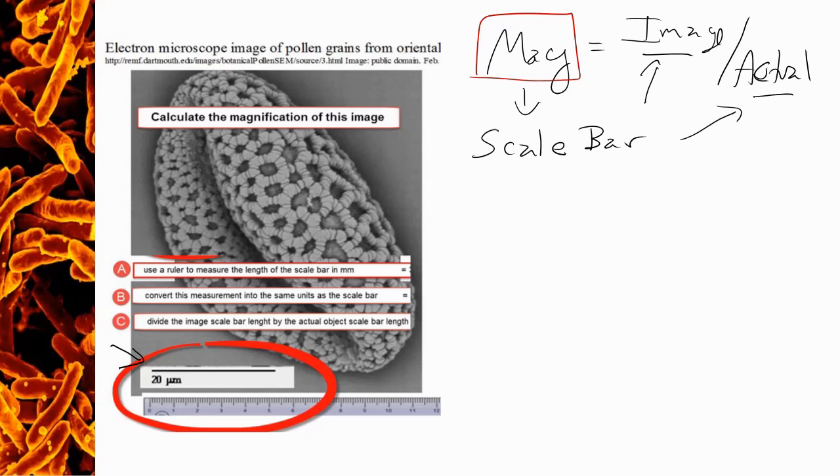The actual size is written on the bar itself. So if you notice, on the bar itself, there's this size value of 20 micrometers. What that value is telling you is that in actuality, the real size of that bar is only 20 micrometers in length. So every scale bar will have a value written under it that is the actual size.